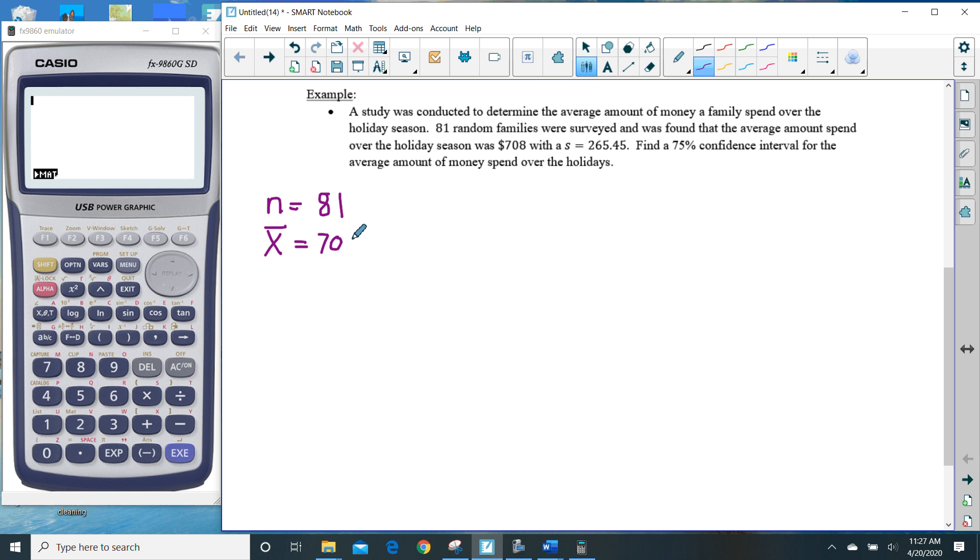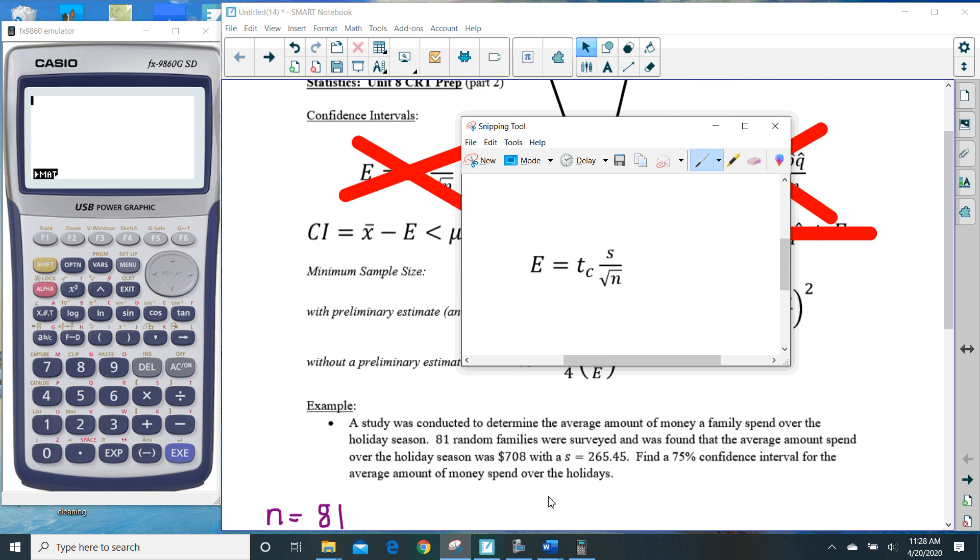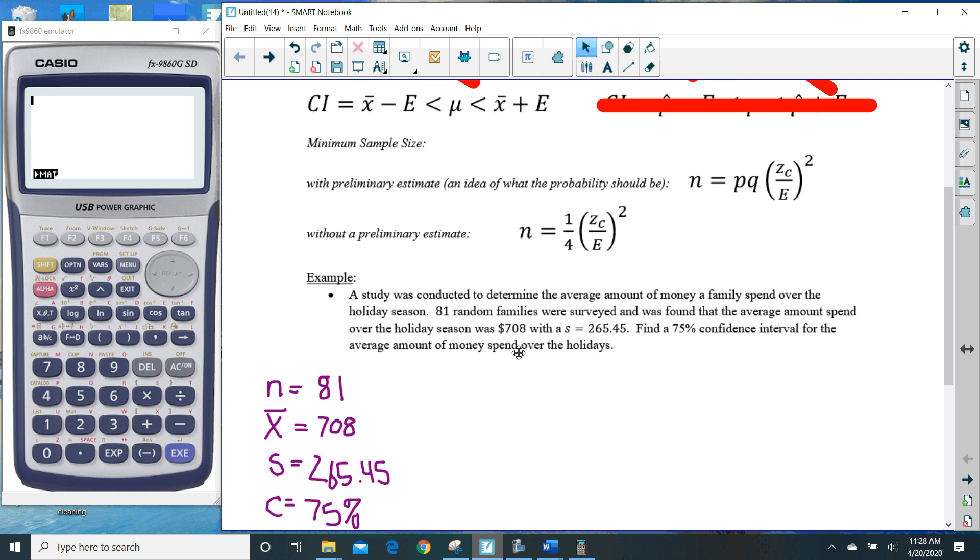$708 with a standard deviation. Notice that this is the big difference. This is a sample standard deviation, it's not a σ, but a sample standard deviation of 265.45. We want a confidence interval that will determine μ. So we are going to make a 75% confidence. Now, bringing this formula into play, which I snipped right here, we have to do a couple different things.